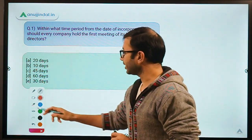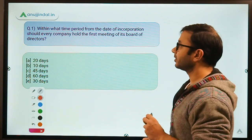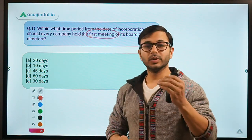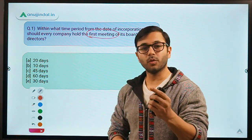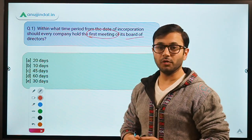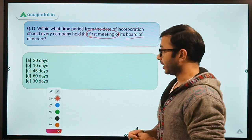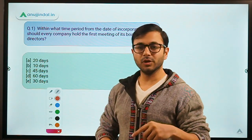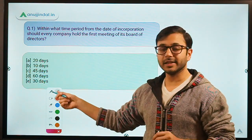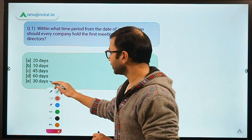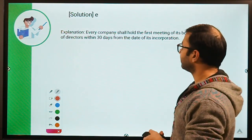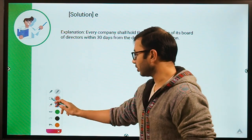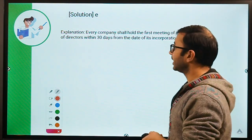The question says: within what time period from the date of incorporation should every company hold the first meeting of its board of directors? The options are 20 days, 10 days, 45 days, 60 days, and 30 days. The correct answer is E — 30 days. This is the key fact to remember about the first board meeting requirement.